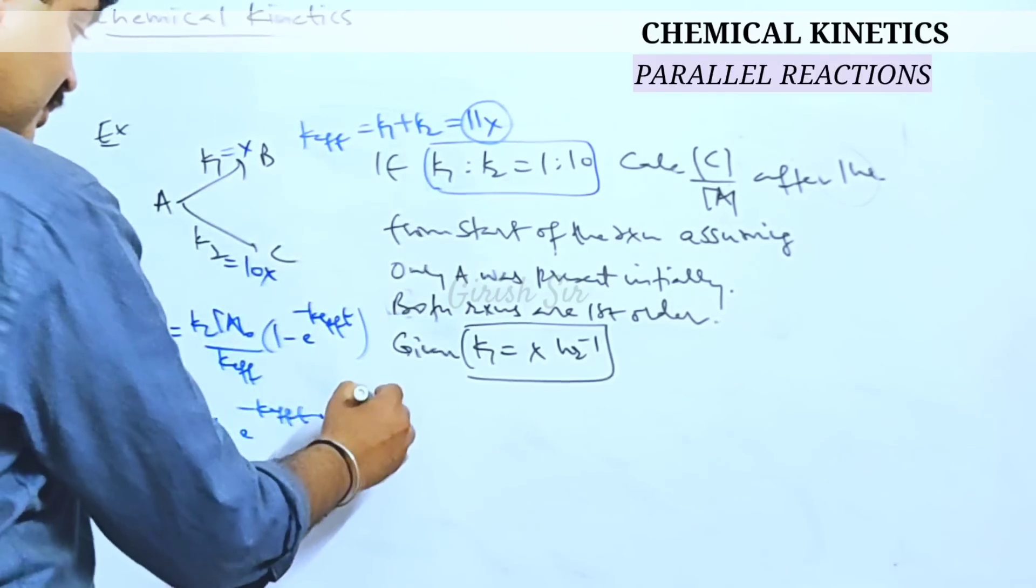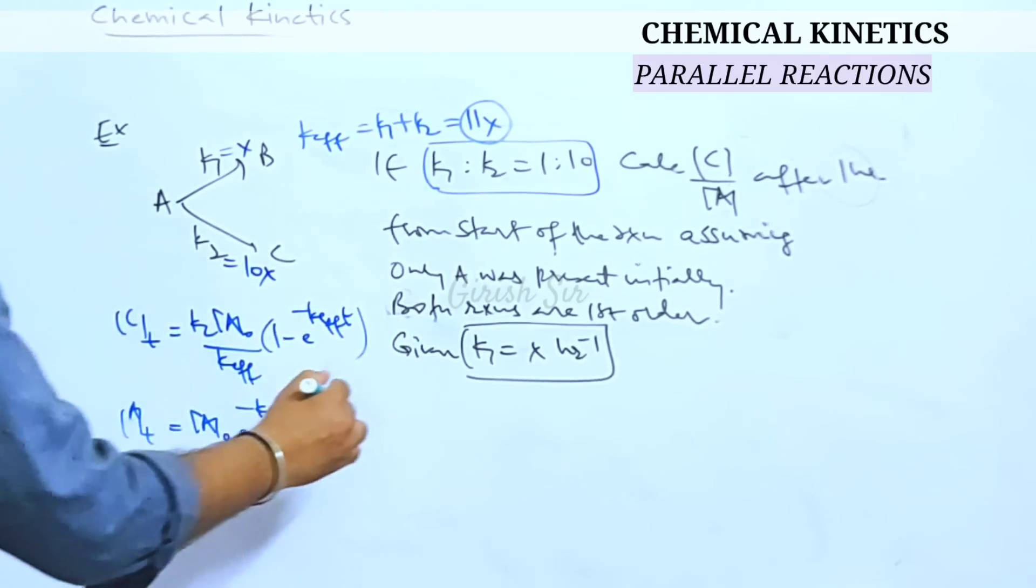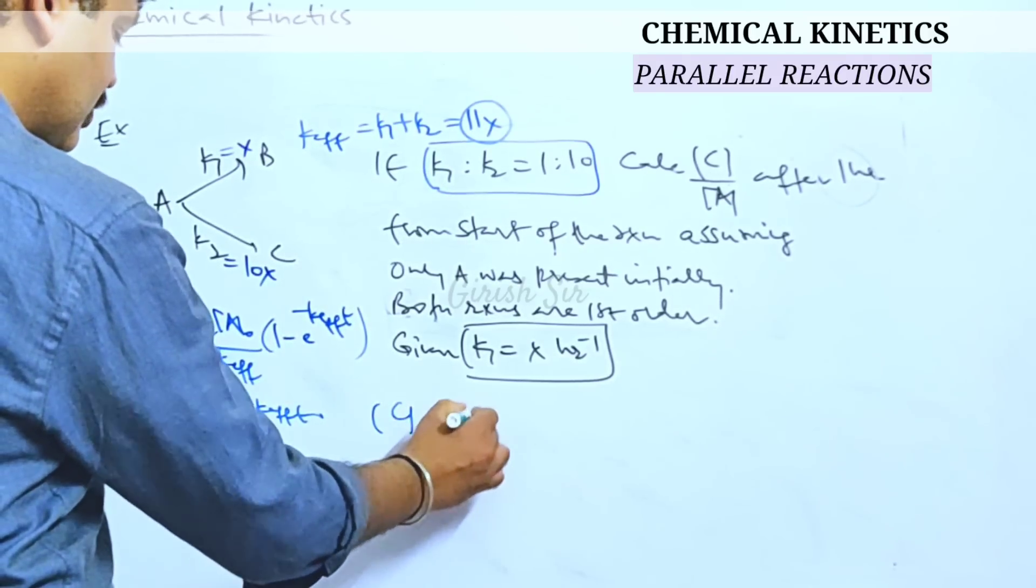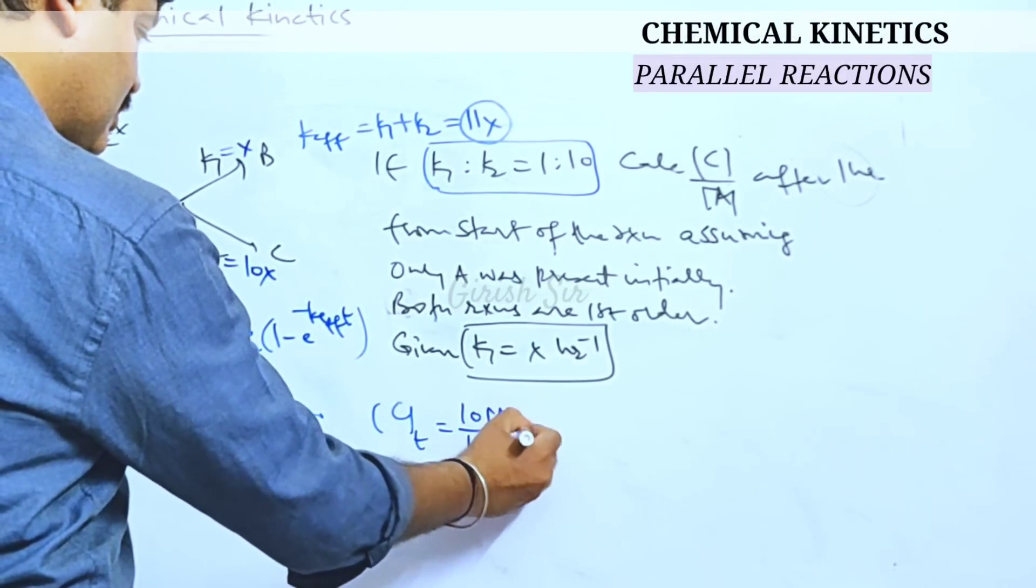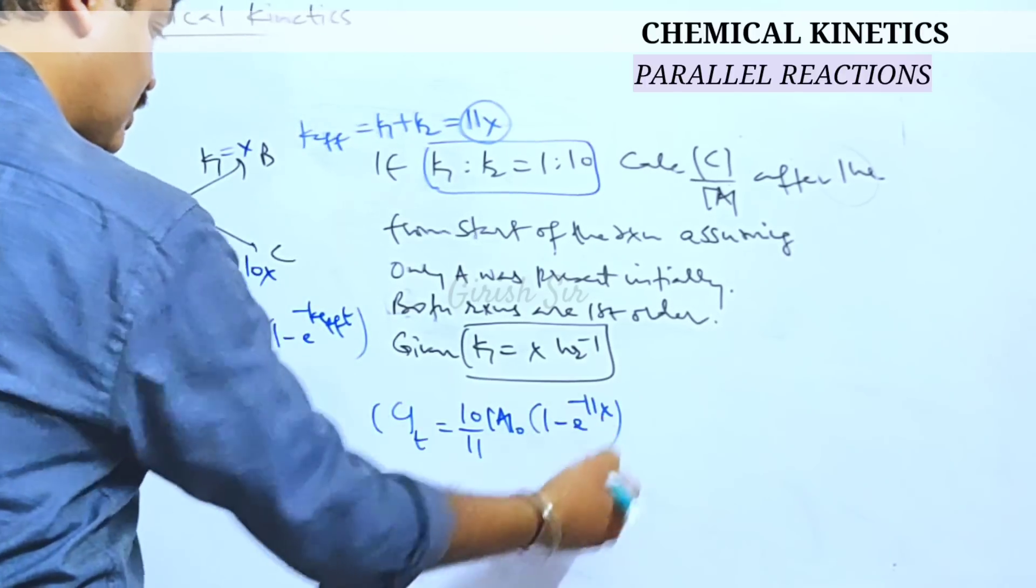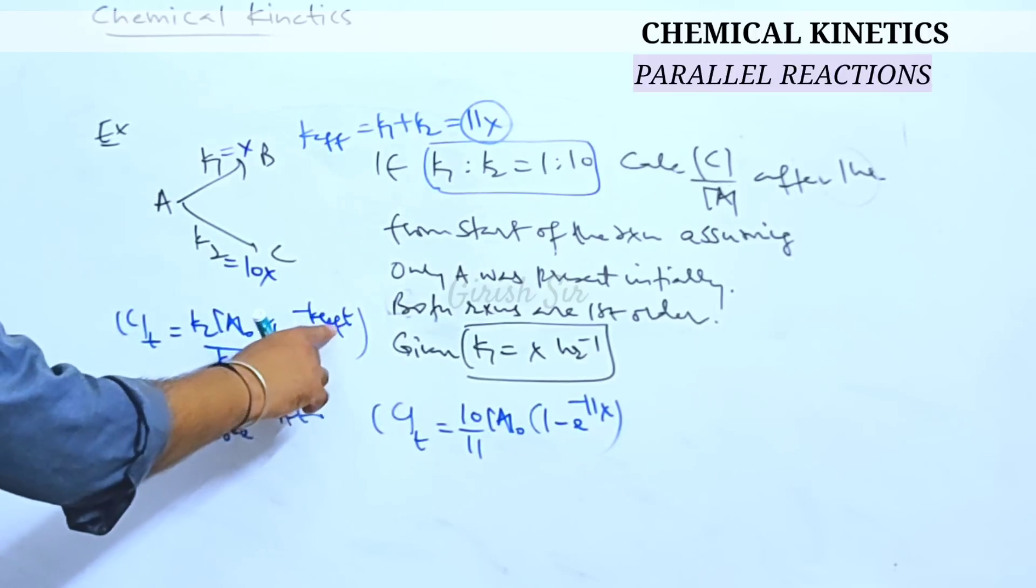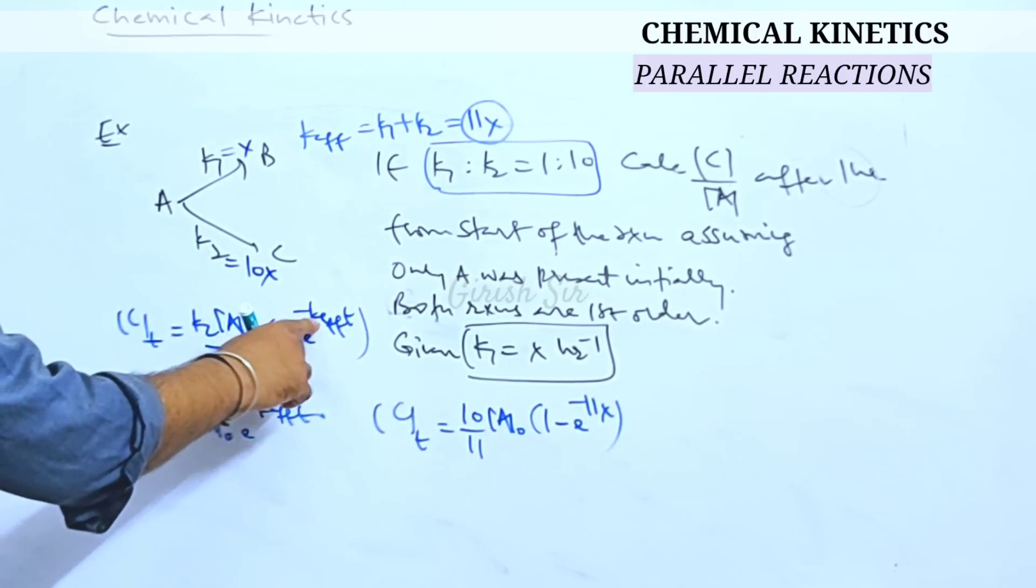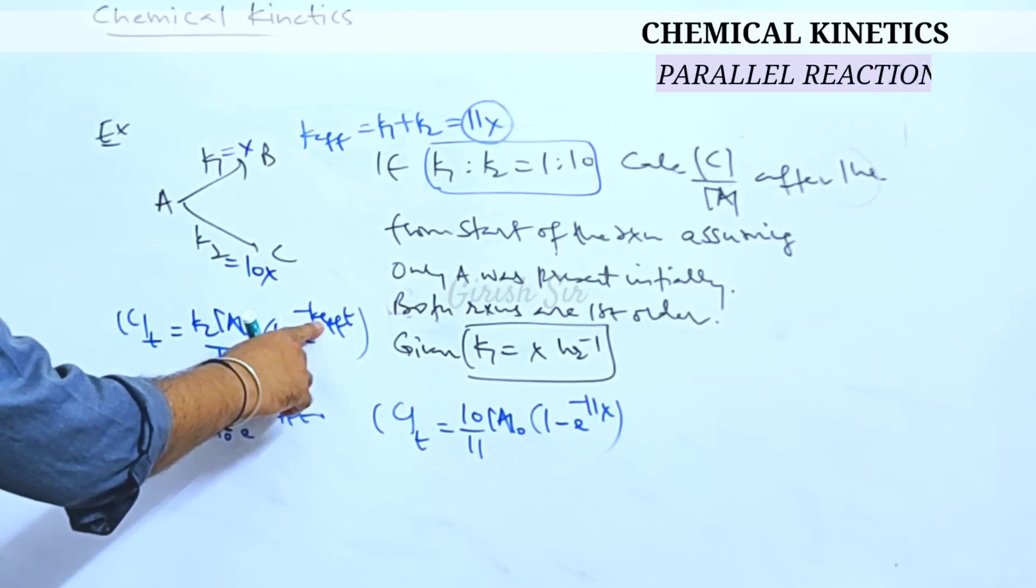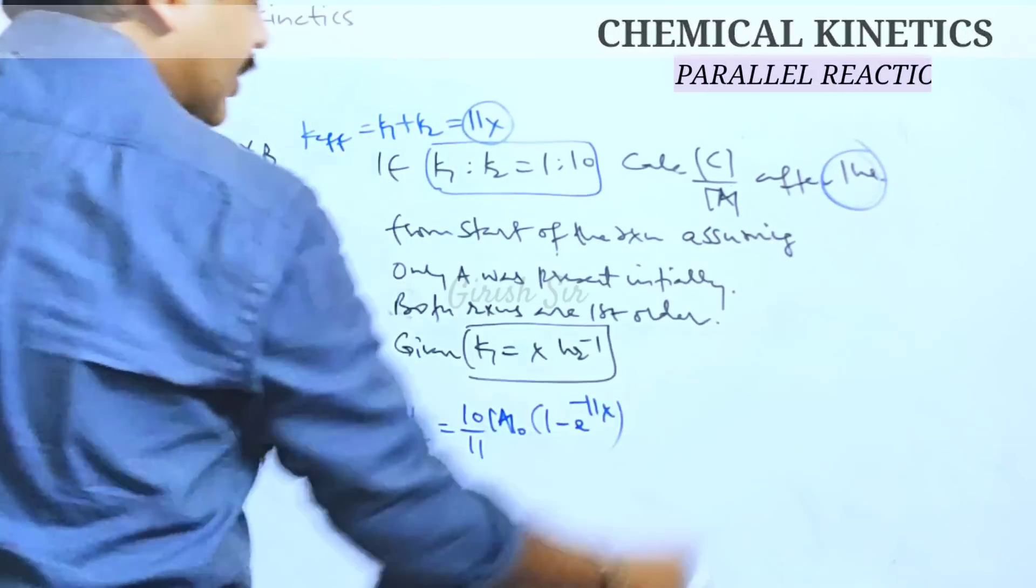So let's put in the given values and try to simplify concentration of C would be, so we can write concentration of C after one hour. I have values of K2, K1 and K effective here as 11x and T as one hour. I think the efficiency we have to find at one hour.